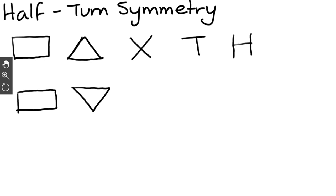The rectangle does have half-turn symmetry. The X would also look the same, so it has half-turn symmetry. The T would look like it's upside down, so it does not. The H would look the same, so it does.